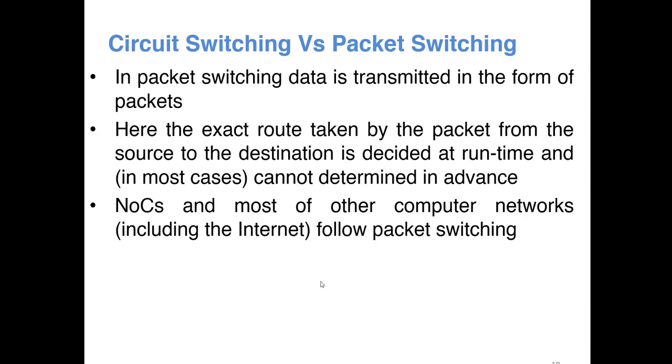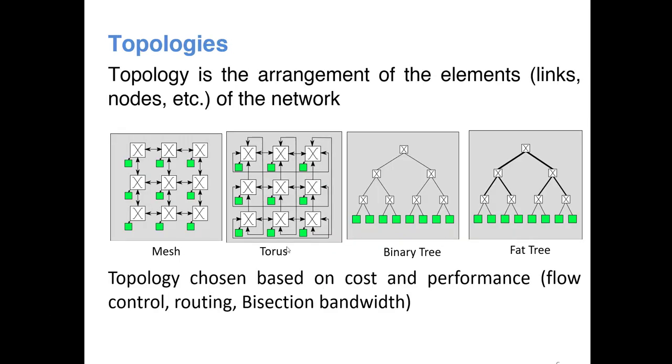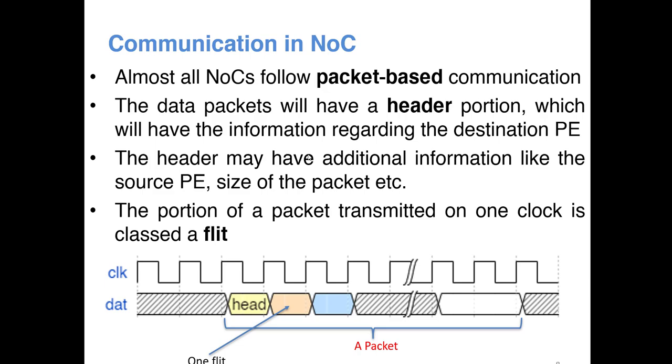Now in case of packet switching, that is not the case. Here the exact route taken by the packet from the source to destination, in most cases you cannot determine that in advance. That happens during runtime. Most of all the NoCs and most of all the modern computer networks, they are packet based, packet switching based, including our internet. Here if you are sending a packet from here to here, the packet may go like this, the packet may go like this, packet may go like this. We don't know, it may be taking one of these routes and it will be reaching the destination. That's what we call as packet switching.